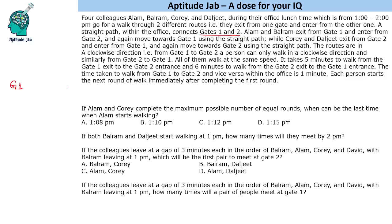Let us say this is G1 and this is G2, connected by a straight path. Alam and Balram exit from gate 1 and enter from gate 2, then move towards gate 1 using the straight path. While Kory and Daljit exit from gate 2 and enter from gate 1, then move towards gate 2 using the straight path. The routes are in a clockwise direction — from gate 1 to gate 2 a person can only walk clockwise, and similarly from gate 2 to gate 1.